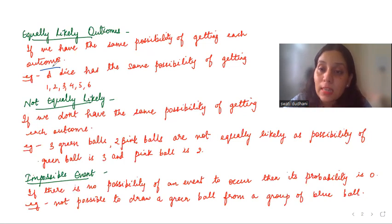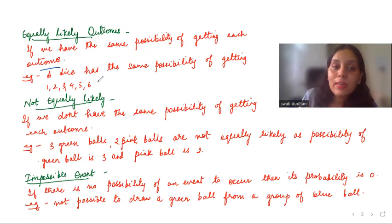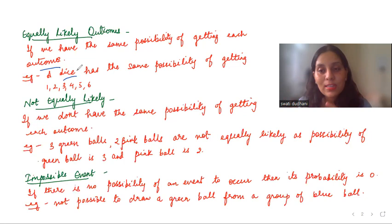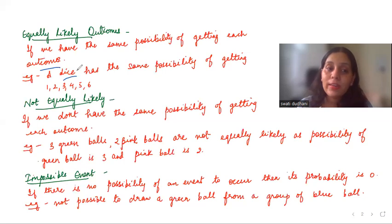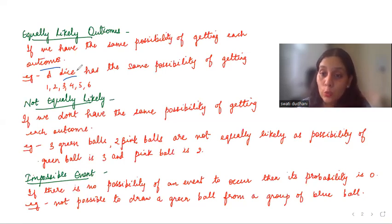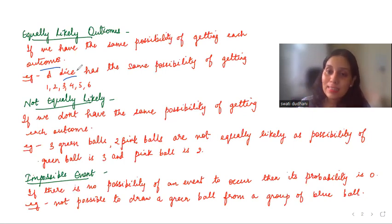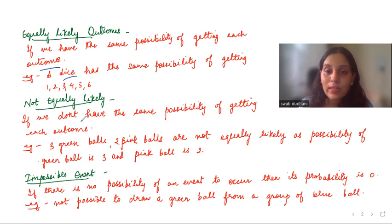For example, a dice has only six outcomes. The probability of getting 1, 2, 3, 4, 5, or 6 — the probable chances of all these is the same. Probability of getting a one is 1/6, probability of getting a two is 1/6 — it is the same. Now, not equally likely means we don't have the same possibility of getting each outcome.